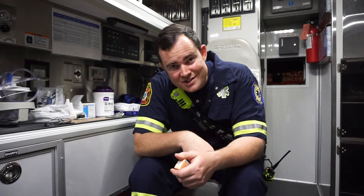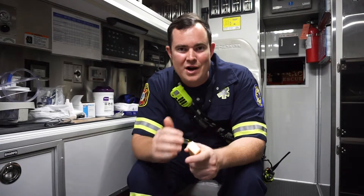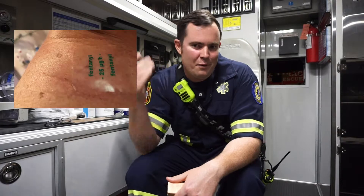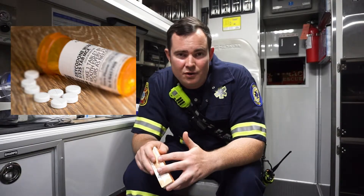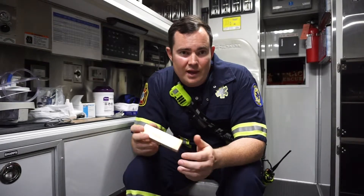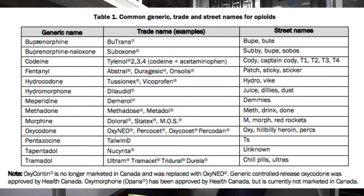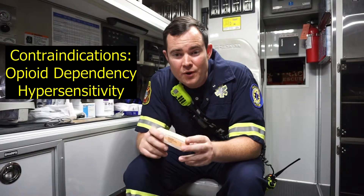Some opioids commonly seen in the field: fentanyl — not only in pill form but also in patches. Always expose your patients. I've had multiple patients not even prescribed fentanyl patches who took a family member's patches for back pain, put a couple on, and ended up unresponsive. Heroin is also very common — it's gotten cheap and there are a ton of users. Pills like oxycodone and Percocet are really popular too. I'll put a list here of opioids you might be seeing in the field.